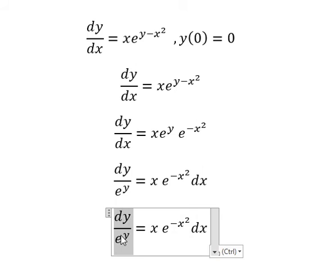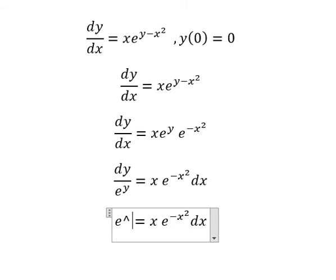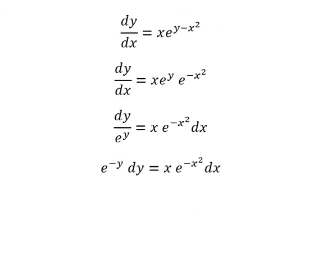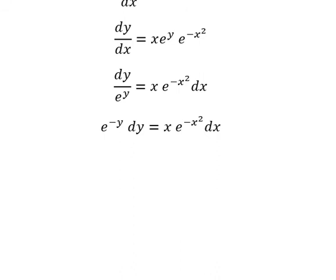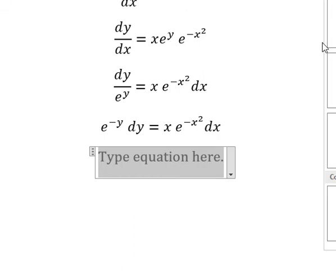This one I can write as e to the power of negative y dy equals x e to the power of negative x squared dx. Next I will put the integration for both sides.